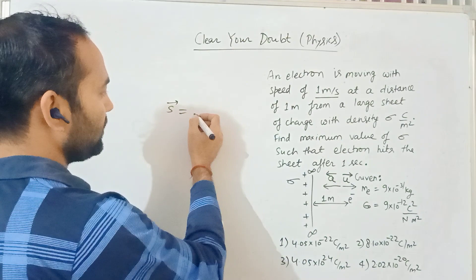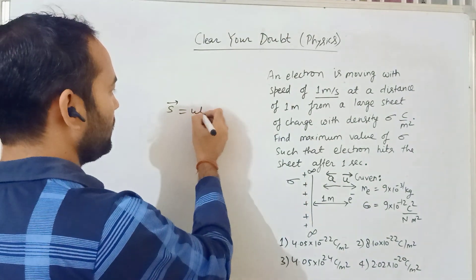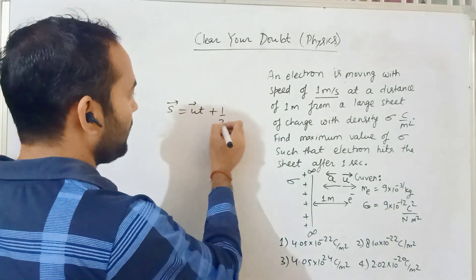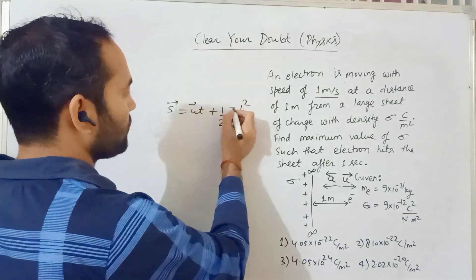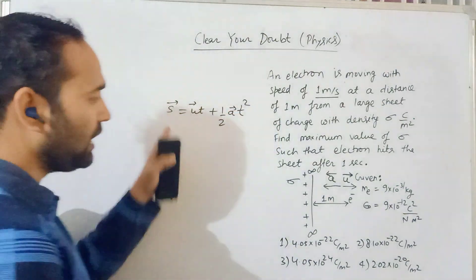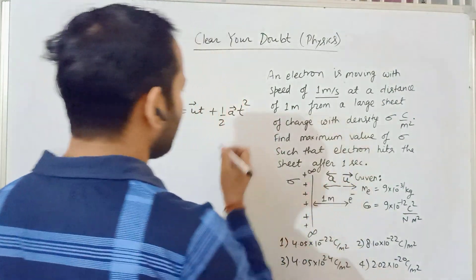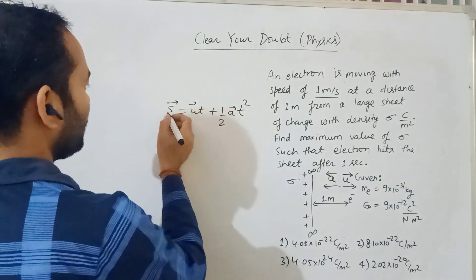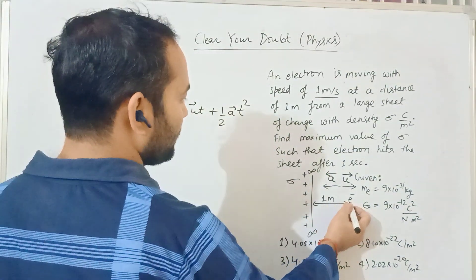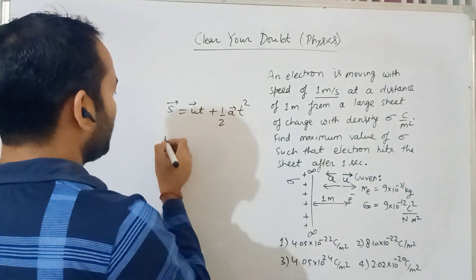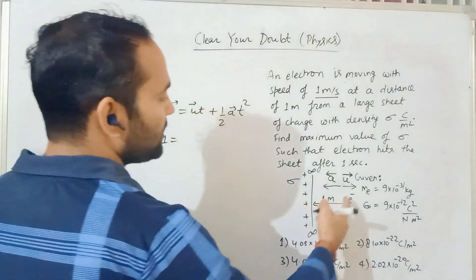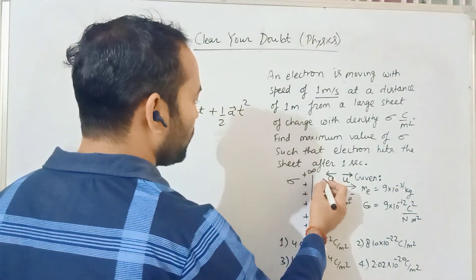So let's use the simple displacement equation of motion: s = ut + (1/2)at². Consider the acceleration direction as positive. Displacement is from here to here, 1 meter.